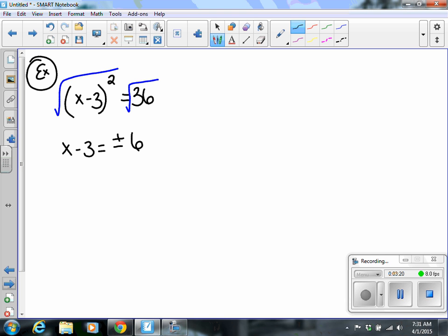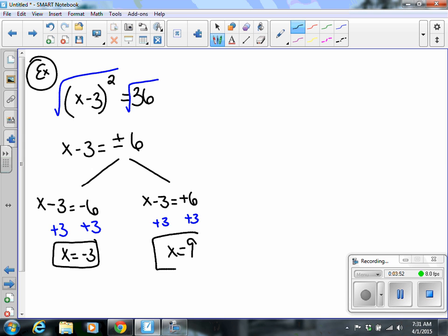So I can have a couple different options. I'm going to split this off then, and I'm going to have x minus 3 equals negative 6, and x minus 3 equals a positive 6. So from here, I can go ahead and solve x, both situations, by adding 3. So x equals negative 3, and x equals a positive 9.